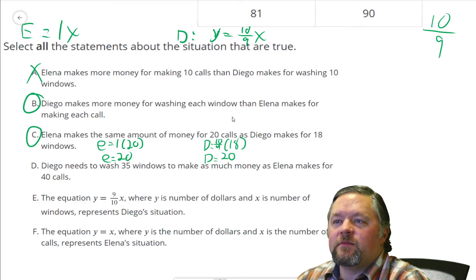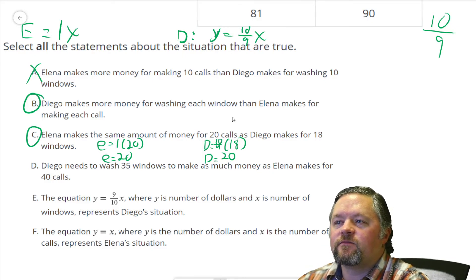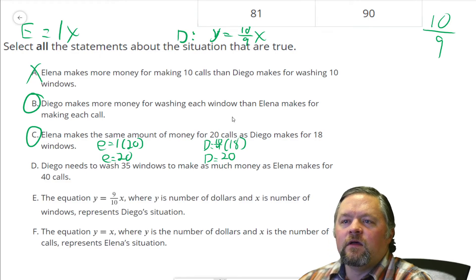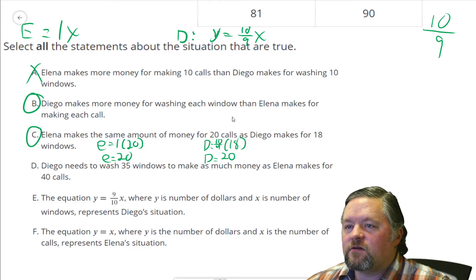So she makes 20 calls, gets $20. He makes 18 calls. He also gets $20.